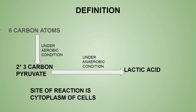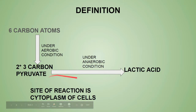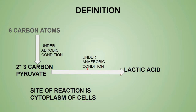So glycolysis is the breakdown of six-carbon glucose. Under aerobic conditions it forms two molecules of three-carbon pyruvic acid. Under anaerobic conditions, such as strenuous exercise, this pyruvic acid is further converted into lactic acid.